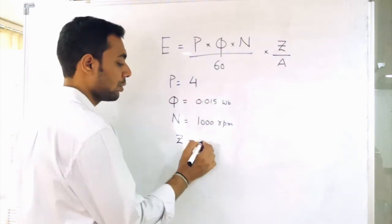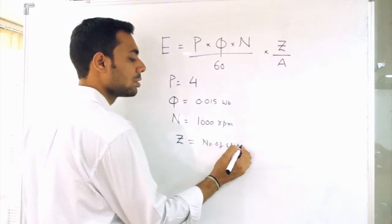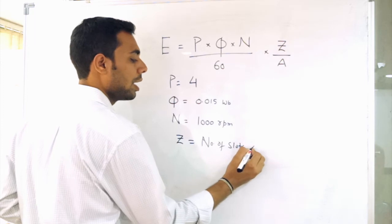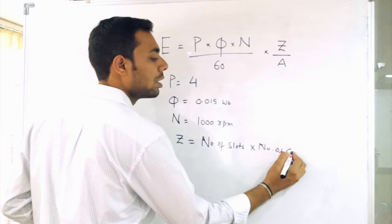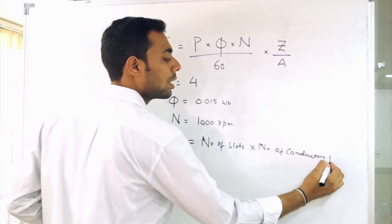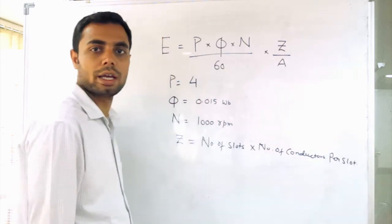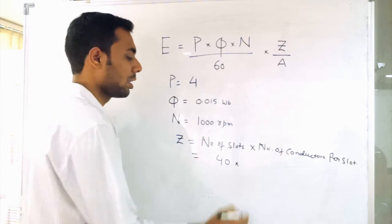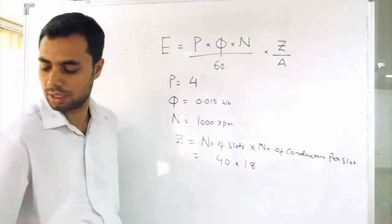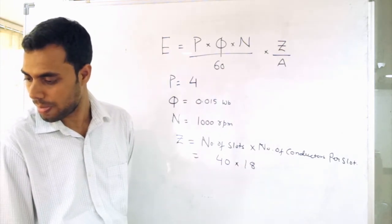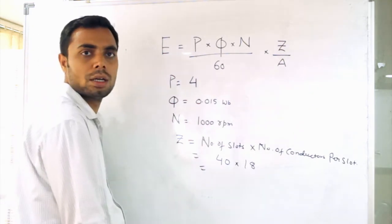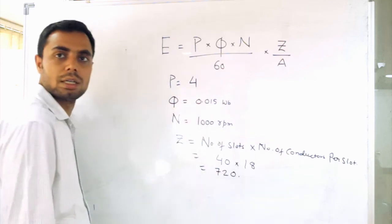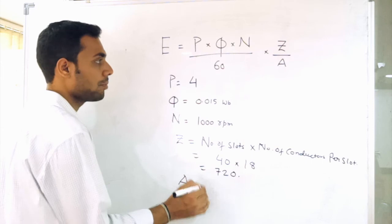Z is the total number of conductors which we can say as number of slots into number of conductors per slot. So what is the number of slots given in the question? It is 40. And what is the number of conductors per slot? It is 18. Let me check it once. Yeah correct. So total number of armature conductors: 40 into 18 is 720.